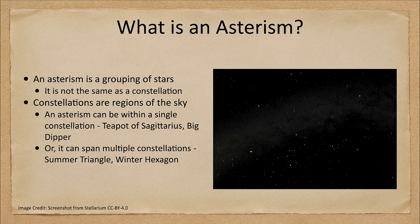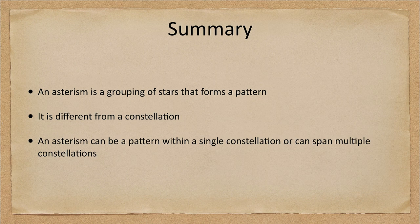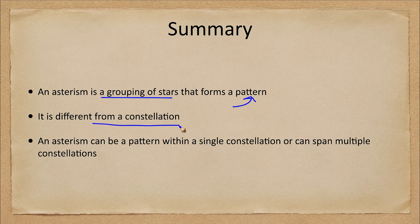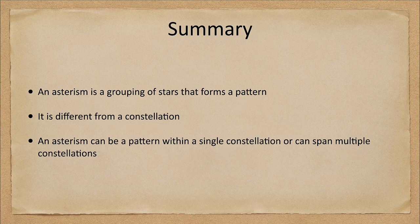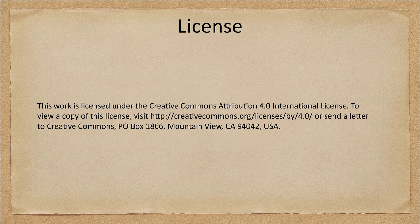So let's finish up with our summary. What we've looked at this time is that an asterism is a grouping of stars that forms a pattern in the sky. It is different from a constellation — constellations are specifically defined regions of the sky. An asterism can be a pattern within a constellation or can span multiple constellations. That concludes this special topic on the idea of an asterism. We'll be back again next week for another special topic in astronomy. So until then, have a great day everyone, and I will see you in class.